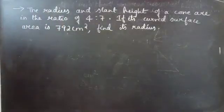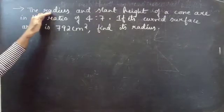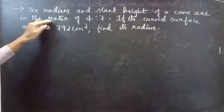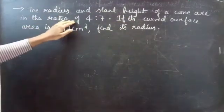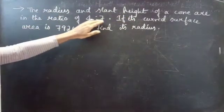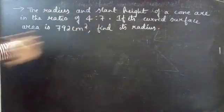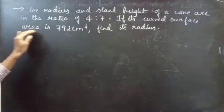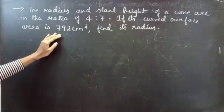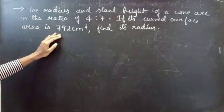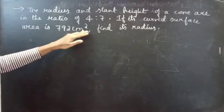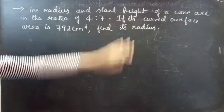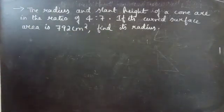Problem: The radius and slant height of a cone are in the ratio 4 is to 7. If its curved surface area is 792 cm², then find its radius.